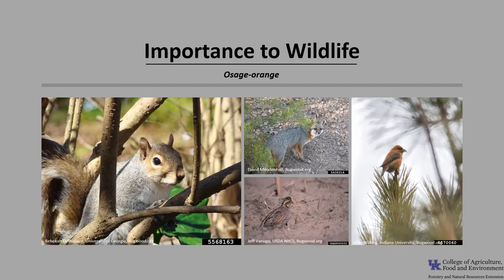Osage Orange is limited to moderately valuable for wildlife. The trees provide shelter for a variety of wildlife, especially small mammals that use the thorny trees for cover. The fruit is bitter tasting and eaten by just a few animals including squirrels, fox, and red crossbill. Occasionally northern bobwhite and woodpeckers use the trees as forage sites for insects.